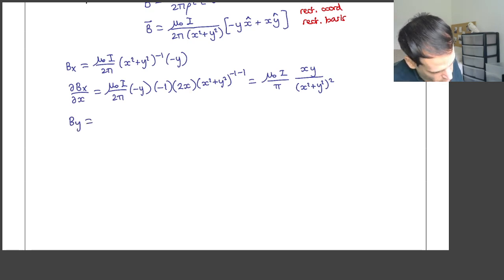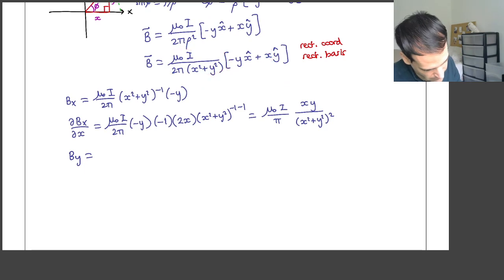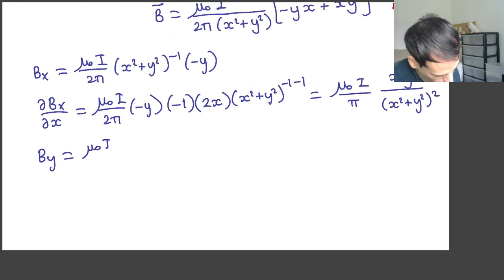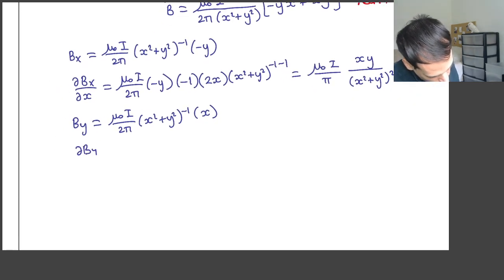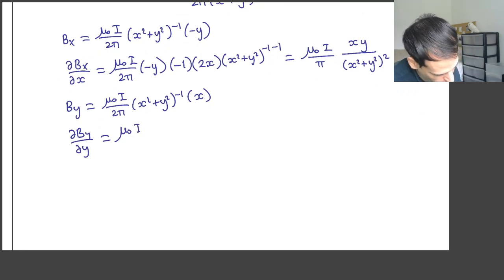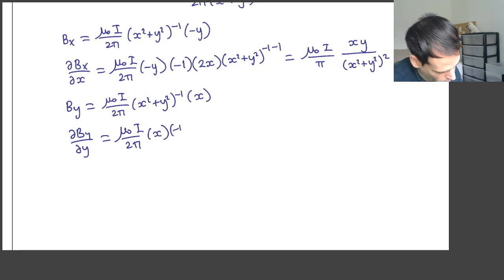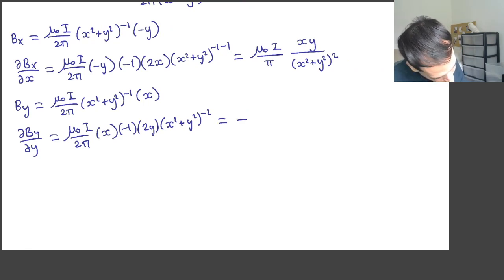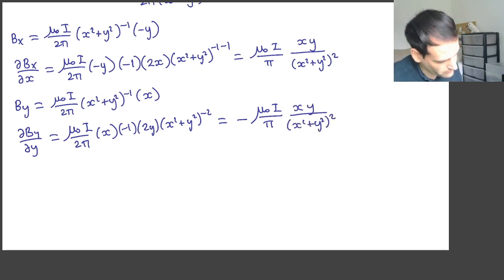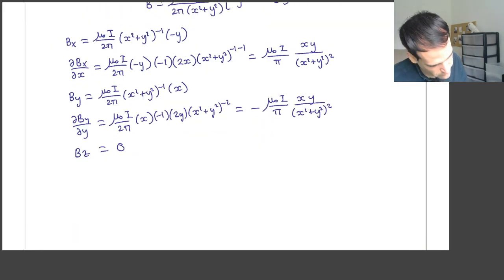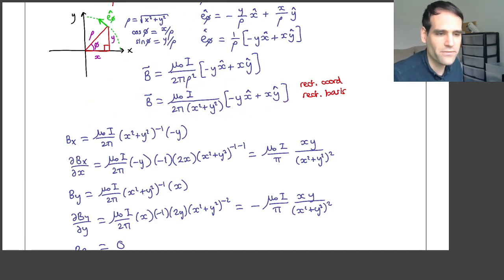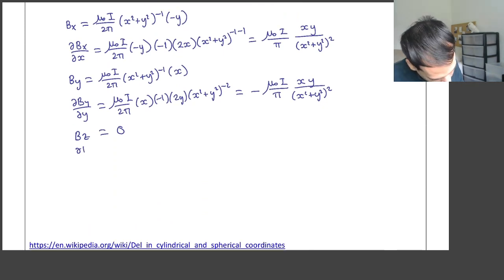By is whatever multiplies ŷ, so By equals the constants times x times (x² + y²)⁻¹. The partial of By with respect to y: x is constant with respect to y, so we get −1 times 2y times (x² + y²)⁻², giving ∂By/∂y = −(μ₀I/π) × xy/(x² + y²)². Finally, Bz equals zero because there is no ẑ in the expression, so ∂Bz/∂z = 0.